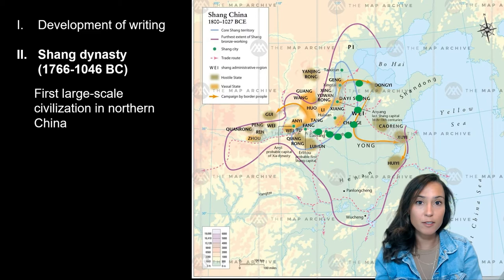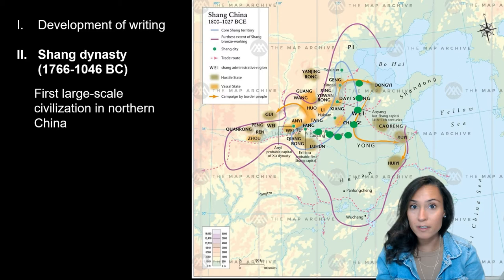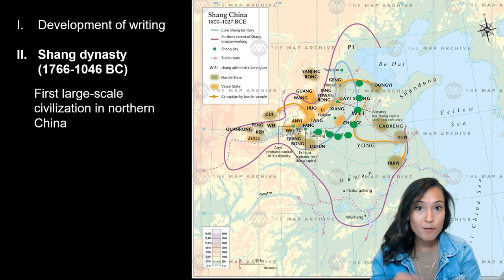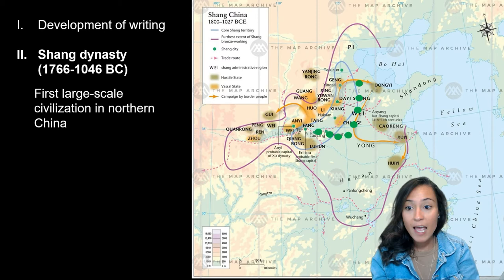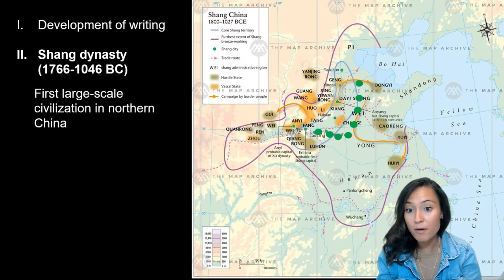Let's talk about what these early Chinese civilizations actually looked like. The first large-scale civilization in northern China that we have archaeological evidence for is called the Shang Dynasty. It was founded by King Tan following the Battle of Minta Gaitao. Evidence from oracle bones informs us that the Shang rulers of China lived in at least seven different capitals situated within the modern provinces of Henan, Shandong, and Anhui.